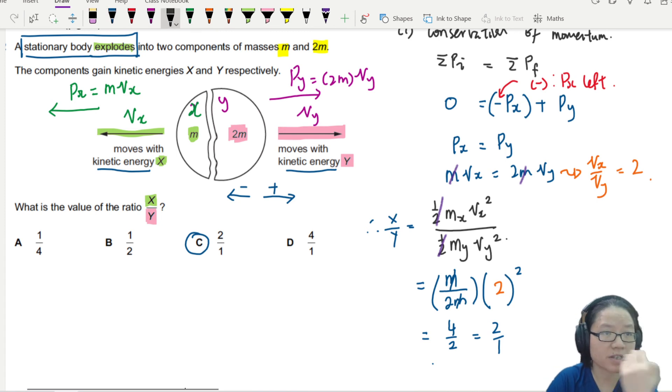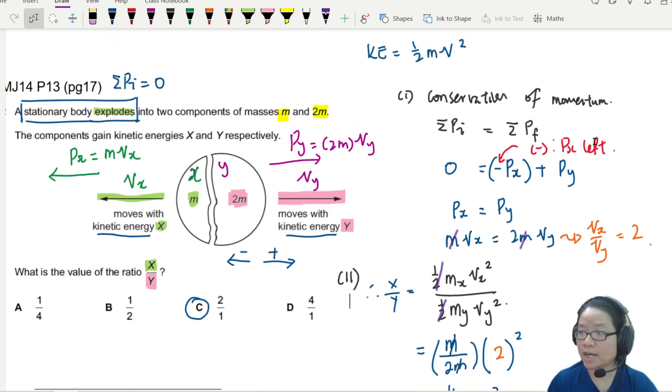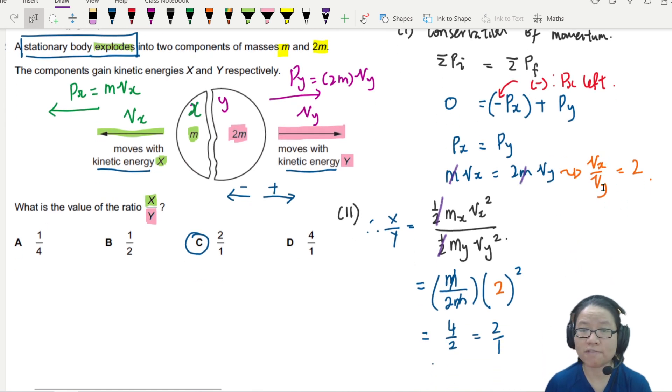So there are two steps here. First step, we will apply the conservation of momentum. The initial momentum of the object is 0. The final must be 0 as well. So which means whatever the momentum is to the left must be the same magnitude as the momentum to the right. Left and right, cancel off, become 0. So from this relationship, I have a ratio of Vx to Vy.